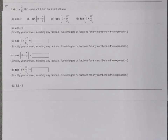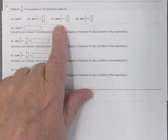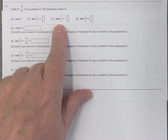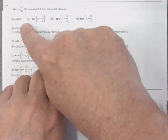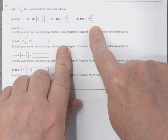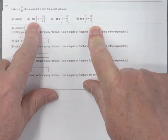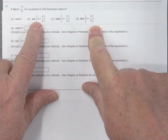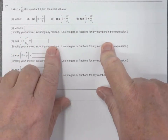A couple more problems using the sum and difference formulas. Instead of writing this whole problem down, let me just show it to you. This problem has four parts: A, B, C, and D. I'll just work the first two parts, because once you see how I do those, you can do the other parts.